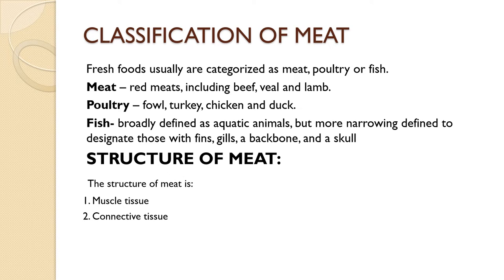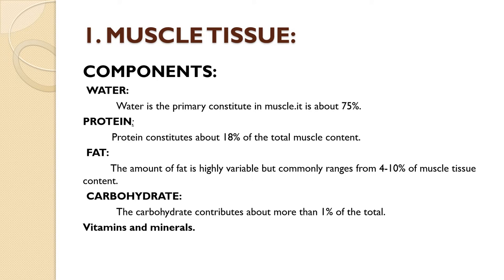Let's have a look at the structure of meat, which is divided into two parts: muscle tissue and connective tissue. Water is primarily constituted in muscle — actually it is about 75% water. The next most evident substance is protein, which constitutes about 18% of the total muscle content. The amount of fat is highly variable but commonly ranges from 4 to 10% of muscle tissue content. Carbohydrates, primarily in the form of glycogen plus a small amount of glucose and glucose-6-phosphate, account for a little more than 1% of the total. Vitamins, minerals and trace amounts of various organic compounds complete the picture.